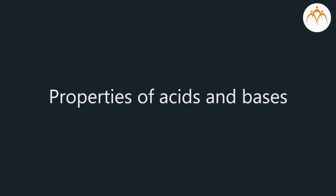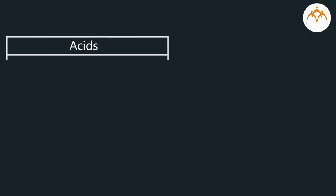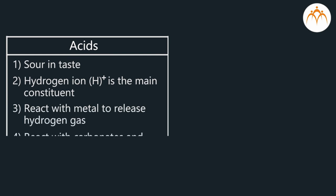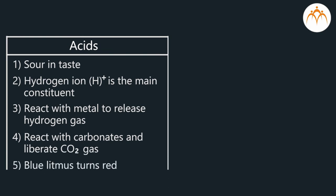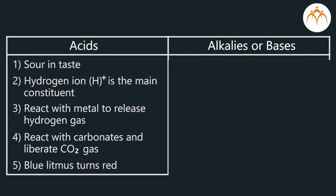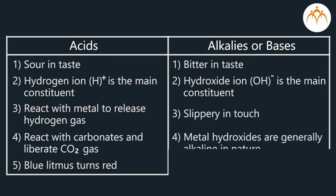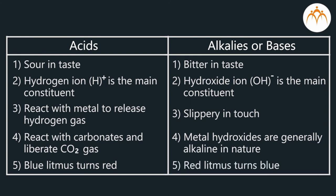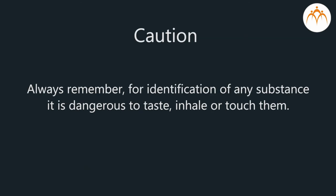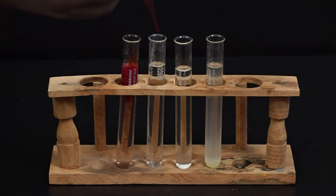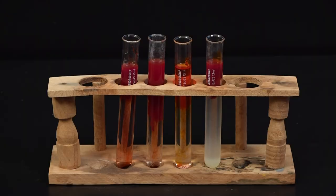Let's revise the properties of acids and alkalies. Acids are sour in taste; hydrogen ion H+ is the main constituent. Acids react with metals to release hydrogen gas, react with carbonates and liberate CO2 gas, and blue litmus turns red. Alkalies or bases are bitter in taste; hydroxide ion OH− is the main constituent. They are slippery in touch; metal hydroxides are generally alkaline in nature; and red litmus turns blue. Caution: always remember it is dangerous to test, inhale, or touch any substance for identification. Summary: indicators, which are neither acidic nor basic and are inert in nature, are used to identify acidic or basic substances without testing, inhaling, or touching them.